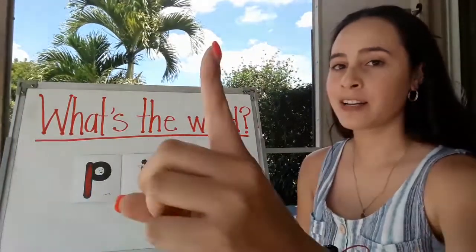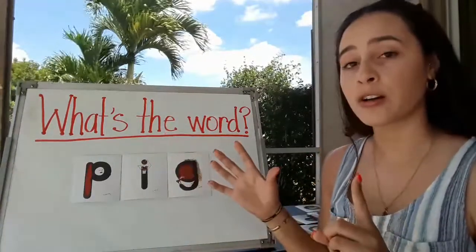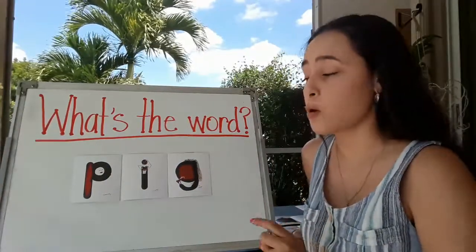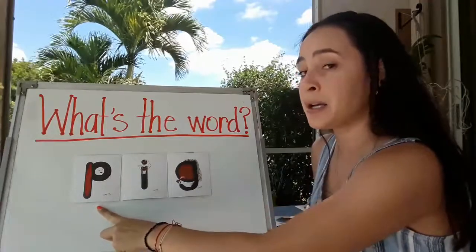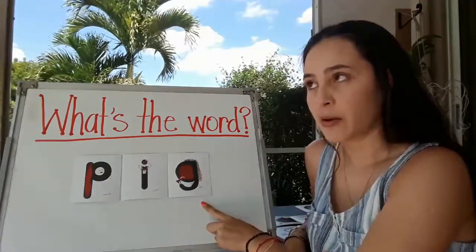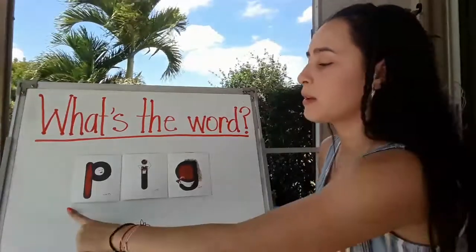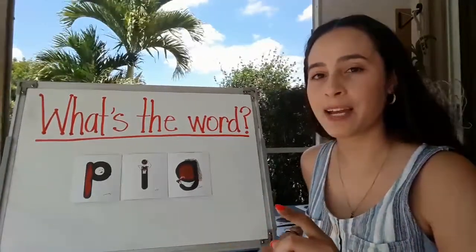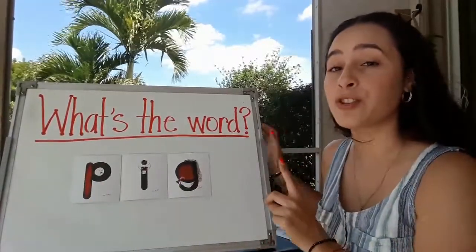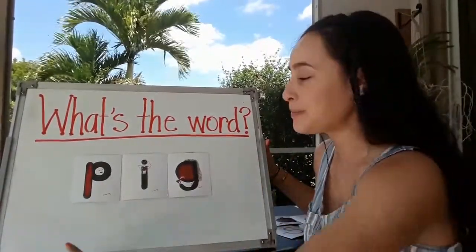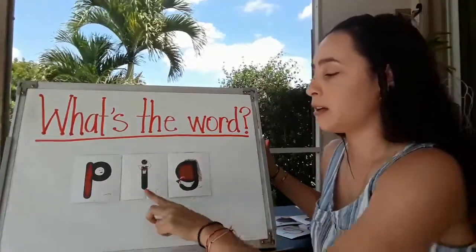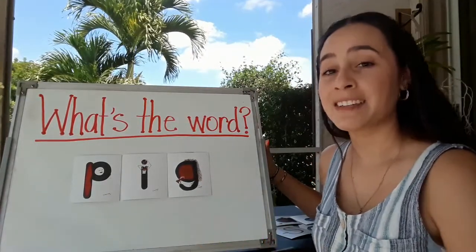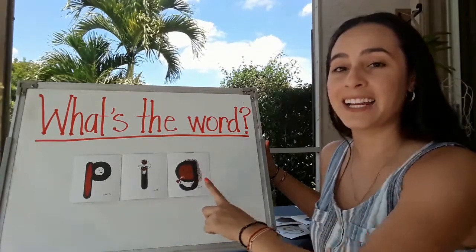Now we're gonna grab our snail finger and sound out this word — we're gonna smush all the sounds together, starting slow because snails go slow. P... I... G. Let's do it again a little faster: P-I-G. I think I start to hear the word now. One last time with a fast snail: P-I-G. Pig. This is the word 'pig' and it has the letters P, I, G.